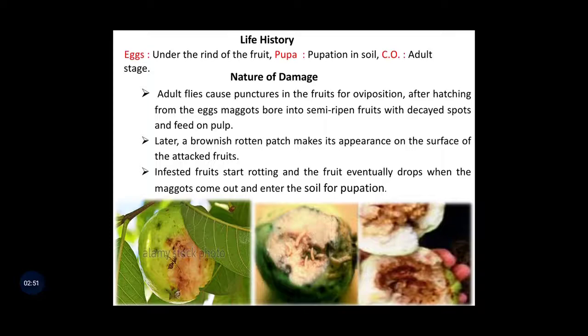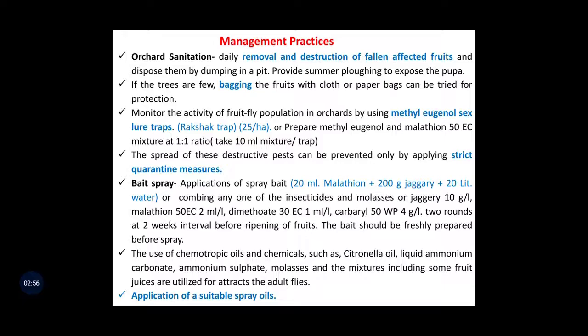The next point is management practices. Firstly, orchard sanitation means daily removal and destruction of fallen and affected fruits, disposing them by dumping in a pit. Also, provide summer ploughing to expose the pupa of this pest. If the trees are few in number, follow the bagging of fruits with cloth or paper bags. We can monitor fruit fly population in orchards by using methyl eugenol traps. The spread of this destructive pest can be prevented by applying strict quarantine measures. Also, we can use spray bait, chemotropic oils, and chemicals. These are the management practices for control of fruit fly.